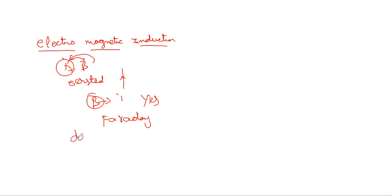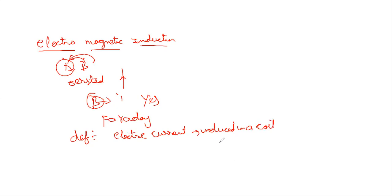The definition of electromagnetic induction is: it is the phenomena in which electric current is induced in a coil by varying magnetic field in the coil. This phenomena is called electromagnetic induction.